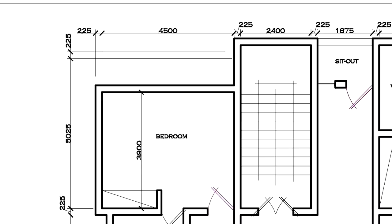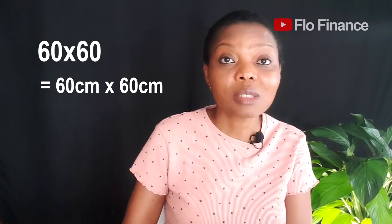Let me explain the inconsistencies in unit of measurement. On your building plan, the floor plan numbers are in millimeters. But in the market, if they ask you the size of the space you want to cover, they expect to hear it in square meters. Meanwhile, the tiles themselves are sized in centimeters - so when they say '60 by 60,' that means 60 centimeters by 60 centimeters.